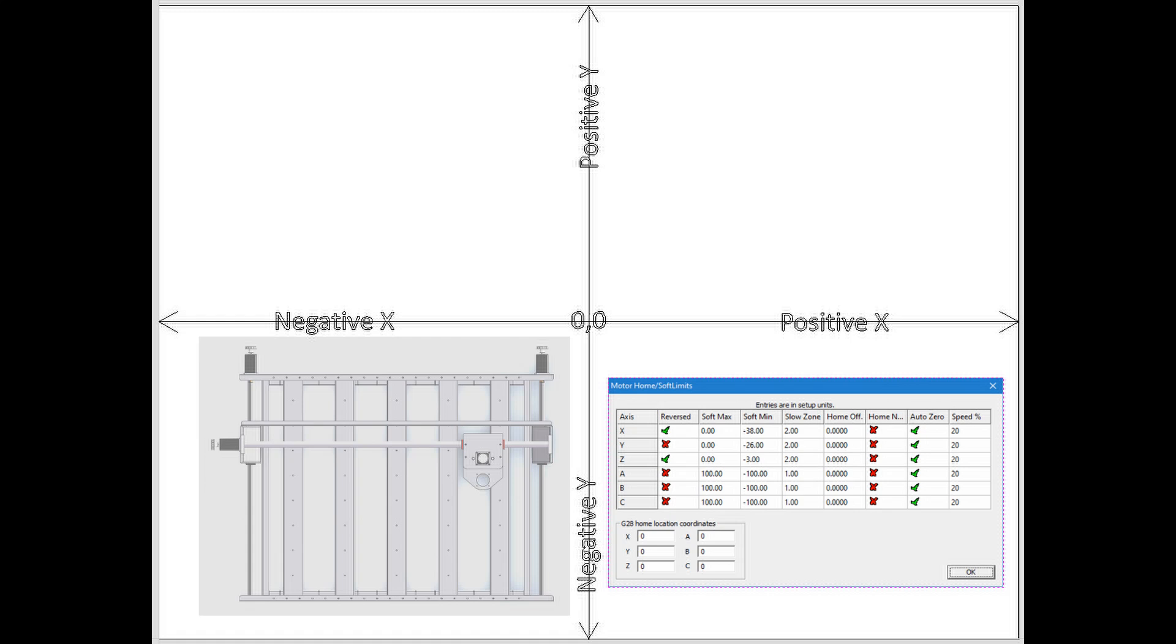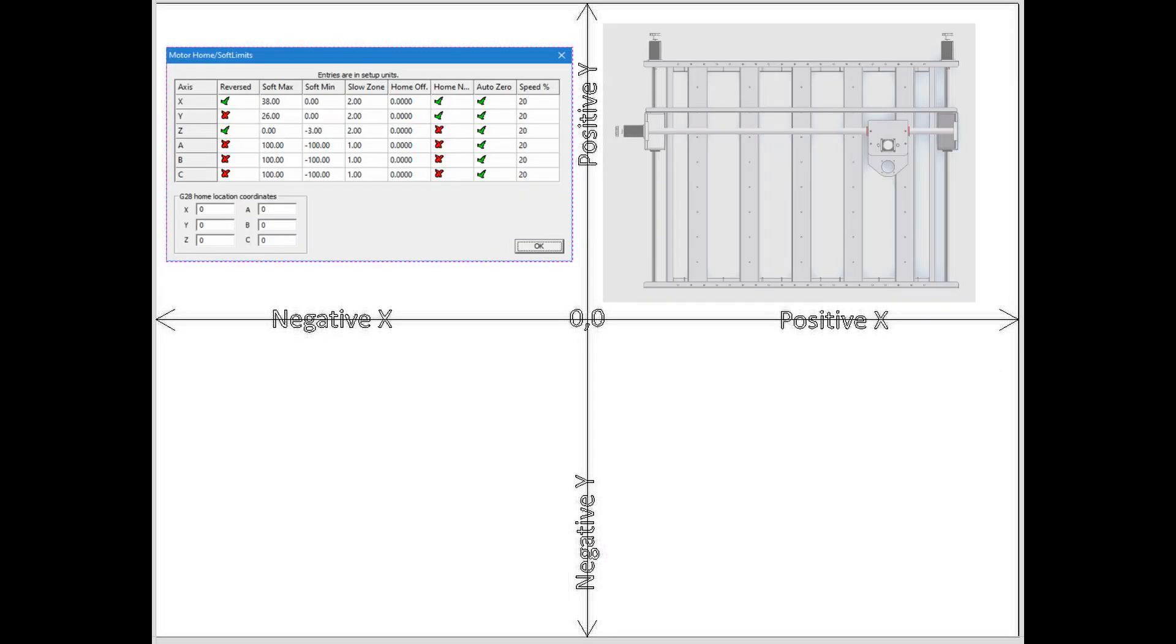Now let's take a look at how the settings would look if this machine homed to the lower or front left like my Avid CNC does. Right off you'll notice that I now have a check mark in the x and y column because now I do want the machine to home in the negative direction to get to the front left.